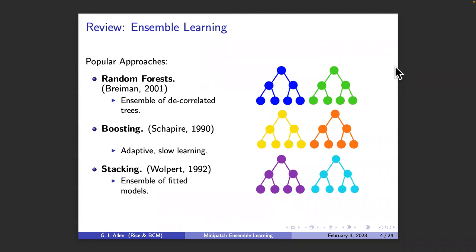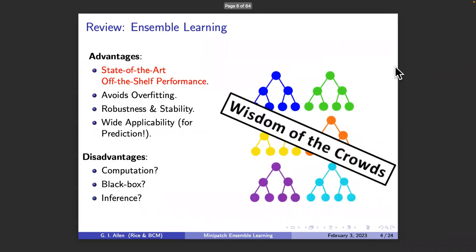To review ensemble learning: everybody knows these techniques from supervised learning. We've got random forest, boosting, and model stacking. These techniques take many ensemble members, typically fit trees, and aggregate their results — it's really wisdom of the crowds. These are great supervised learning methods that give state-of-the-art, off-the-shelf performance for tabular data. They still win Kaggle competitions; a lot of those deep learning approaches take the final layer and throw it in a random forest, and that's what wins.